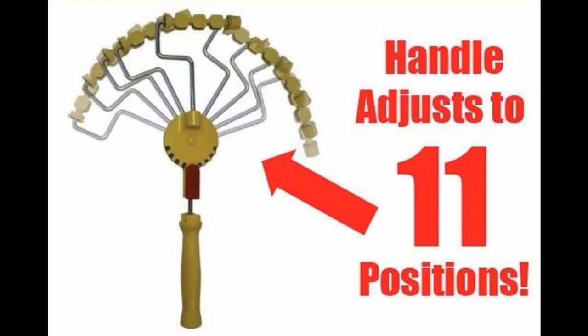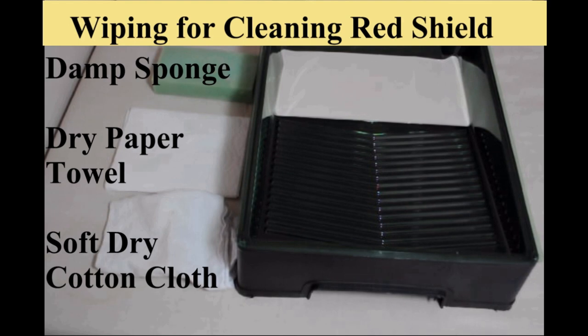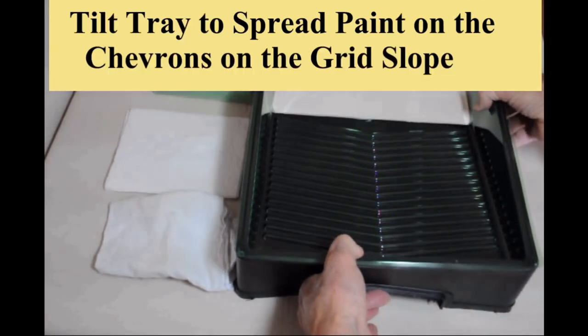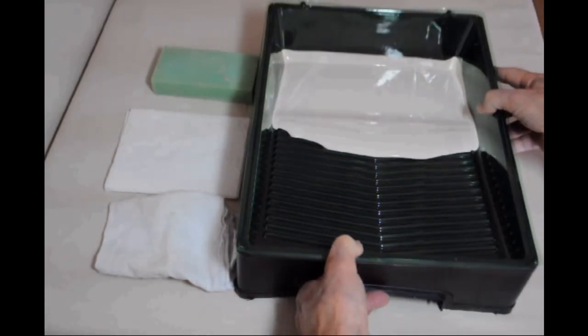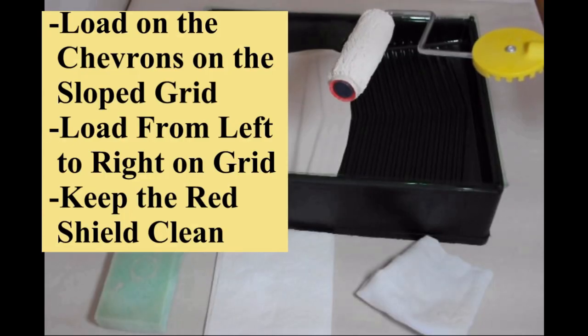Keeping the outside edge of the red paint shield clean is important. Watch these simple instructions. It is best to tilt the tray to make sure you have some paint on the chevrons or sloped grid portion of the tray to load the roller on.